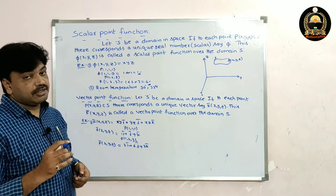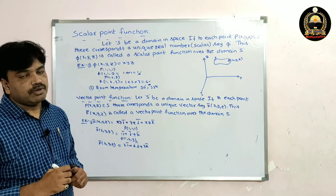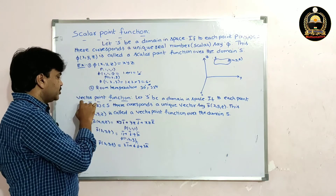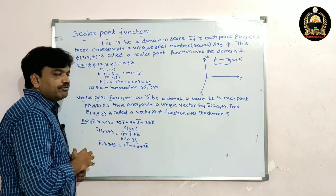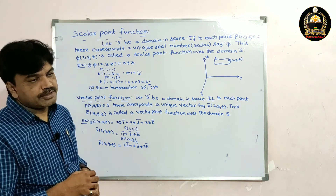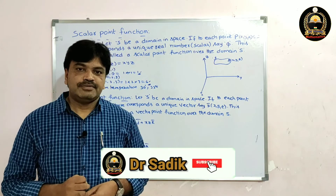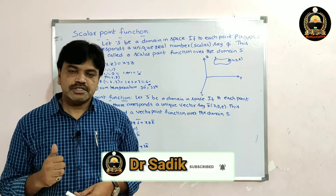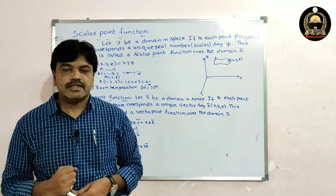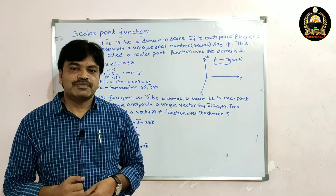So F̄(x, y, z) is called a vector point function. That is all about scalar point function and vector point function. Please subscribe to this channel, like and share this video. Hope you understand. Thank you for watching. Jai Hind.